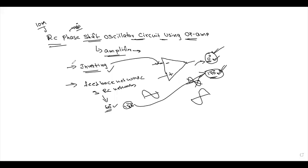We have a total of three RC networks, giving a combined phase shift of 180 degrees from the feedback network.